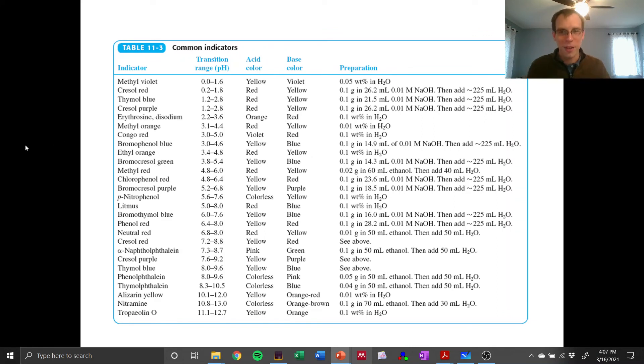And we have a whole table of them. So this is table 11-3 in your textbook. And we have a bunch of different indicators that we can use. And it shows the transition range. So these are based on the pKa values. It shows what the acid color is and the base color is. And right at the point in the middle, you'll get a mixture of the two.